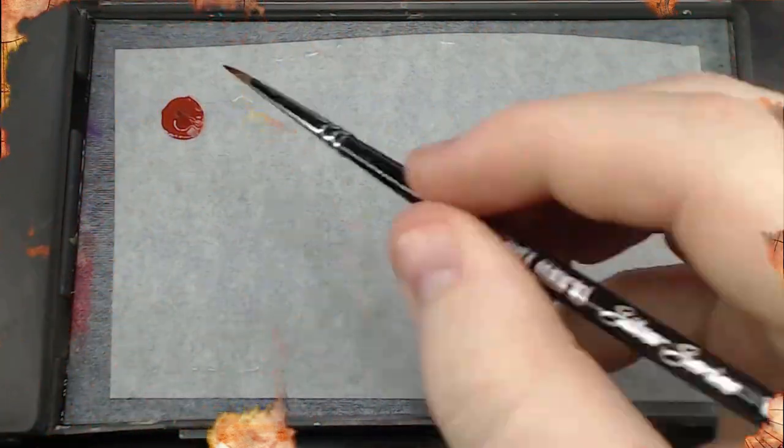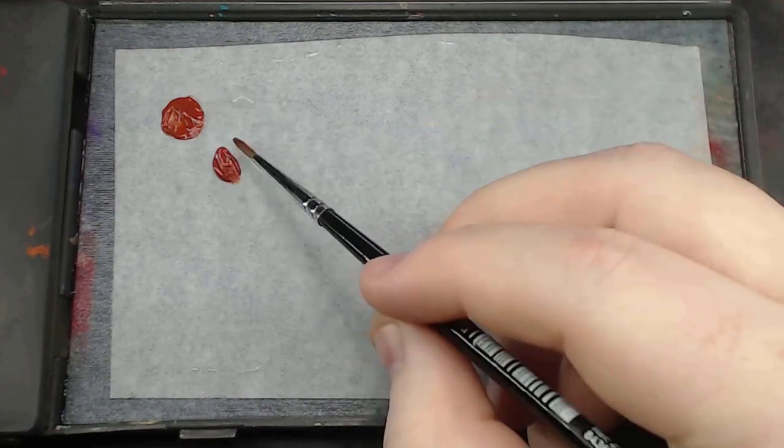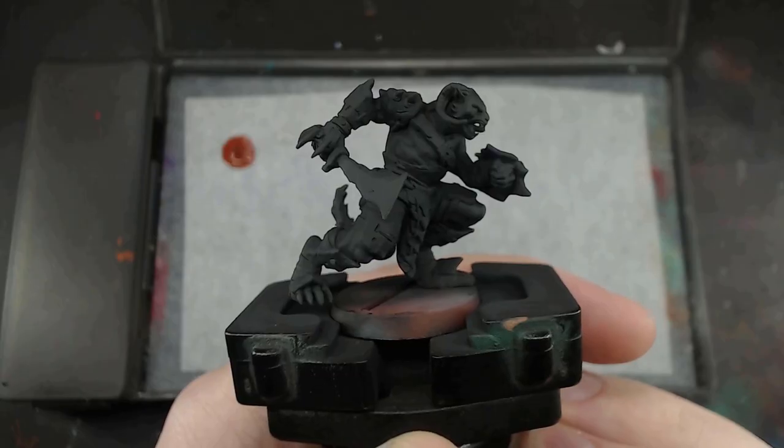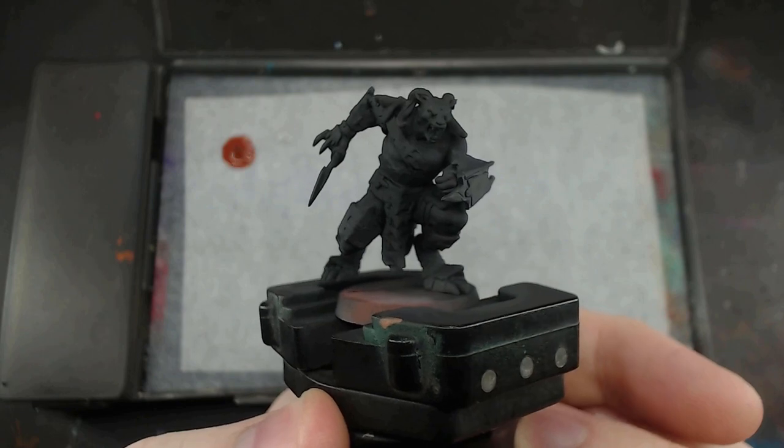I'll start with this simple method, and it starts with two familiar steps. Step one of course is going to be a base coat. All of these I'll be doing over a black base coat.